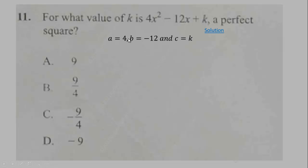a equals 4, b equals negative 12, and c equals k. So b squared minus 4ac equals 0 if this is a perfect square. We substitute the a, b, and c: 12 squared is 144, and this will give us minus 16k. We now solve for k to get 9.